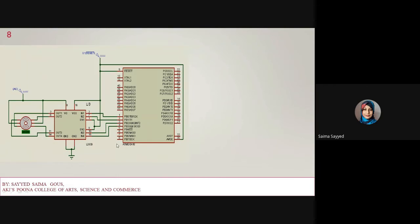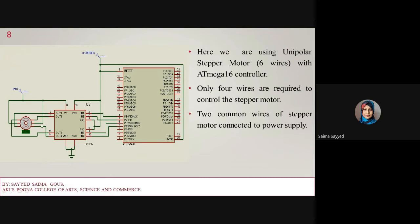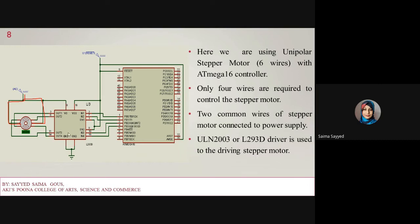Here is the circuit diagram to interface the stepper motor to ATmega16. We are using a unipolar motor with six wires, but only four wires are required to control it with the microcontroller. The two common wires of the stepper motor are connected to the power supply. The driver IC used is either ULN2003 or L293D, which can supply 500 to 600 milliamperes of current. I have used the L293D to drive this stepper motor.